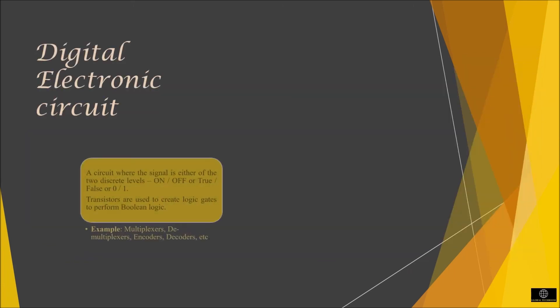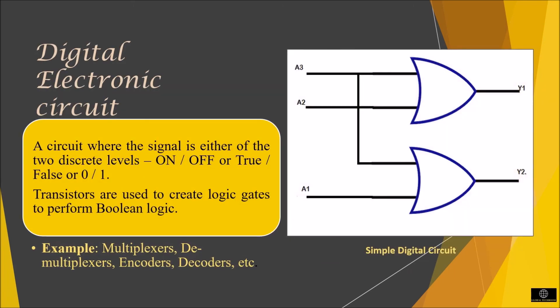Digital electronic circuit is a circuit where the signal is either of two discrete levels, on-off or true or false. Transistors are used to create logic gate to perform boolean logic. A digital circuit alters the waveforms into pulse signals and it has to change the information back to an analog signal to produce the output. Some of the examples are multiplex, demultiplex, encoder, decoder etc.